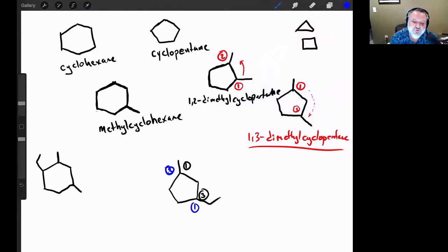Well, it turns out that the blue numbering is correct, and the reason is that if there's a tie, then I start alphabetically. And because that's an ethyl group instead of a methyl group, I'm going to start with the ethyl group being number one. So this is one-ethyl, three-methyl, cyclopentane.